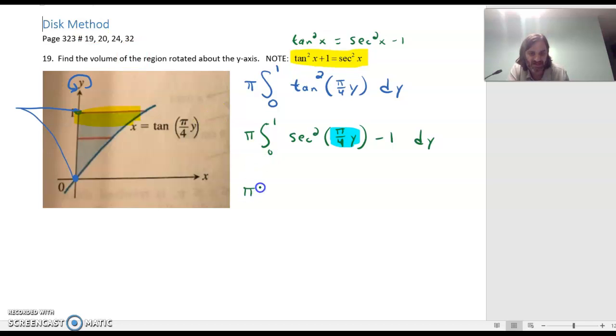When we do this, we will have pi times the integral of secant squared—excuse me, secant squared integrates to tangent. We'll keep the original argument in there, pi over 4y, but the derivative of that is pi over 4, so we would have divided by it, so it would be 4 over pi on the outside. Then minus 1 will integrate into minus y. Let me just change that parentheses to a bracket to make it look more appealing, and this is going to run from 0 to 1.